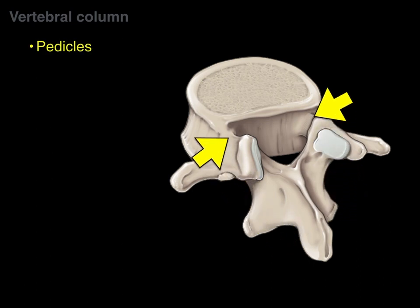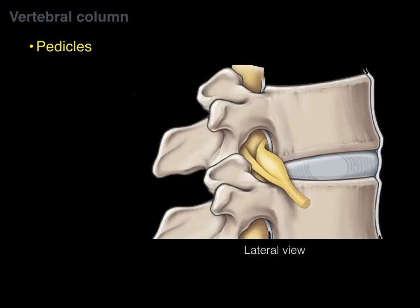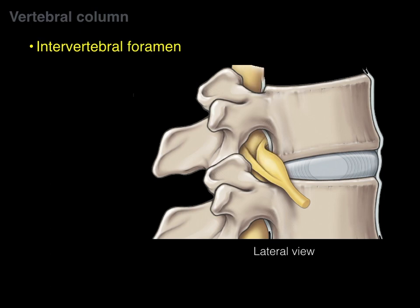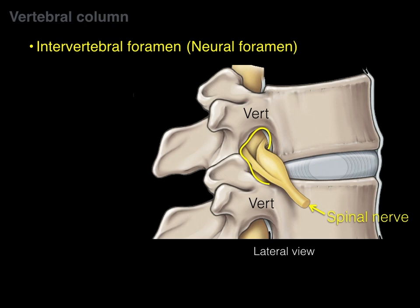The pedicle connects the vertebral arch — including the transverse process — to the vertebral body. In a lateral view, between adjacent vertebral pedicles is an opening called the intervertebral foramen. Because this foramen is traversed by a spinal nerve, radiologists also use the term neural foramen for this opening.